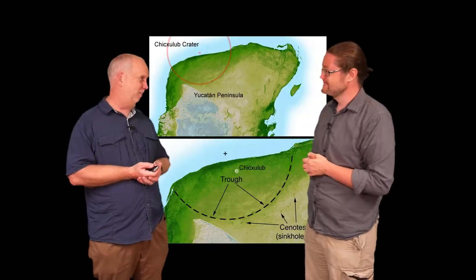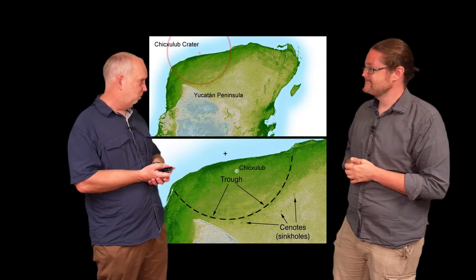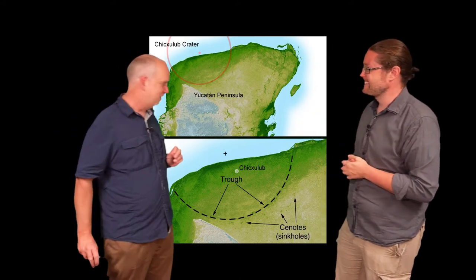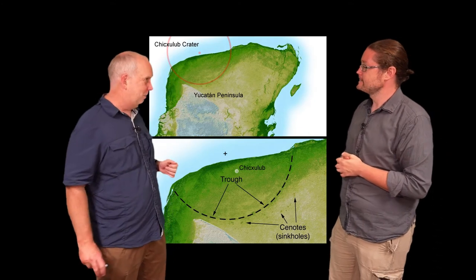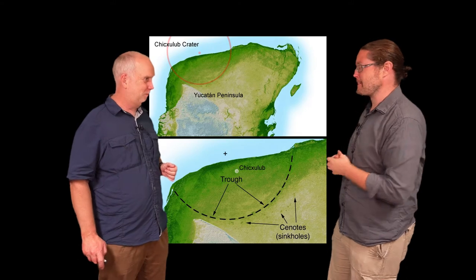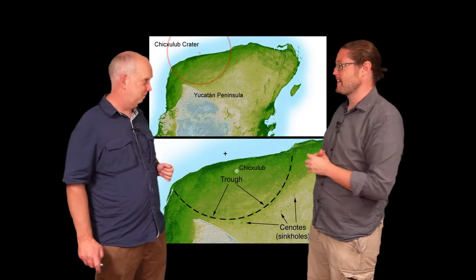Enough rain and frost and everything would eventually erode it and fill it in. For example, one of the biggest and most famous impacts is the Chicxulub crater, which is thought to be the dinosaur killing meteorite. This is in the Yucatan Peninsula in Mexico, and on the surface there's really very little to see. You don't actually even notice this thing is there.